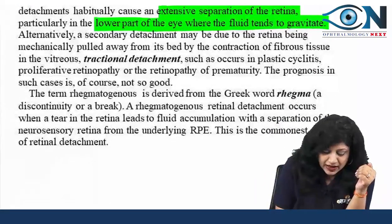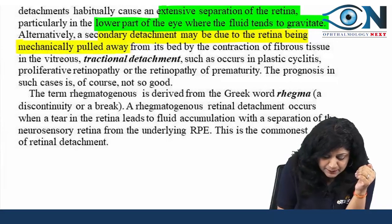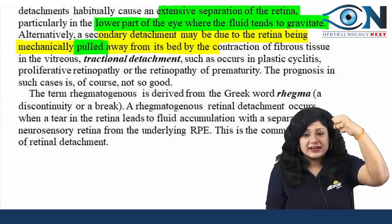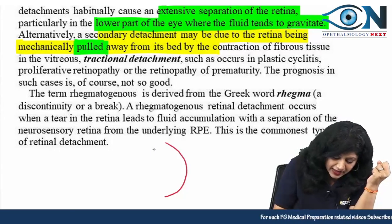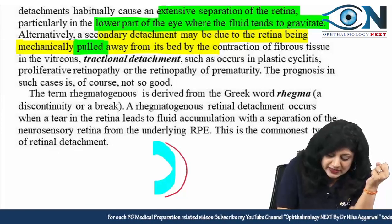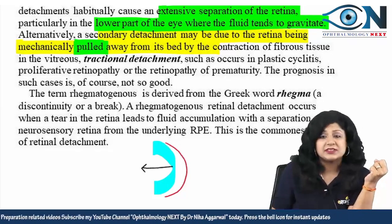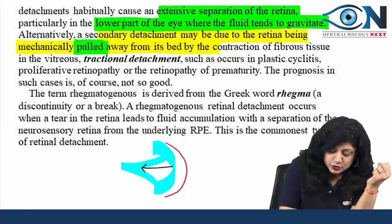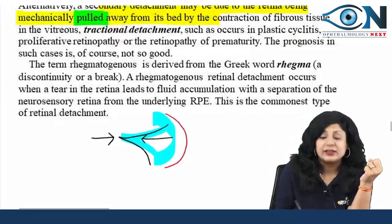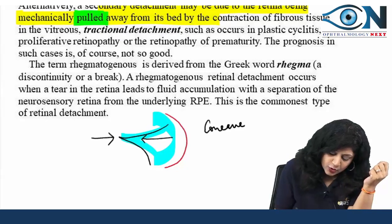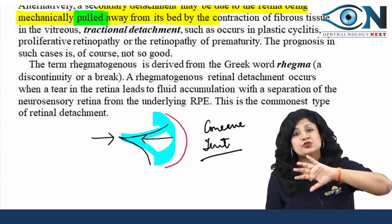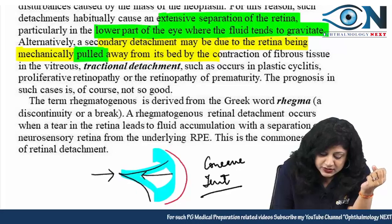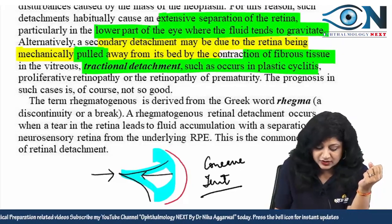Alternatively, detachment can occur due to the retina being mechanically pulled. One type is due to pushing (exudative) and the other is due to pulling (tractional). When something pulls the retina, we expect a concave or tent shape. Convex is exudative RD; concave or tent-shaped is tractional RD, due to contraction of fibrous tissue.